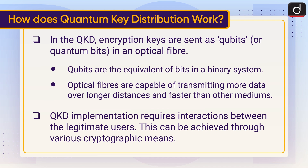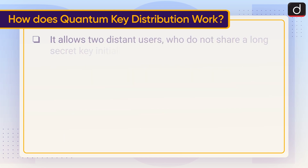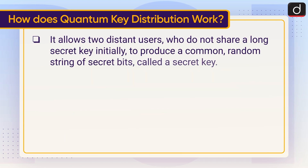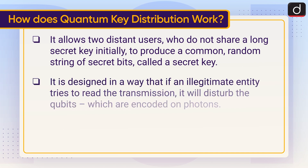QKD implementation requires interactions between the legitimate users, which can be achieved through various cryptographic means. It allows two distant users who do not initially share a long secret key to produce a common random string of secret bits, called a secret key.